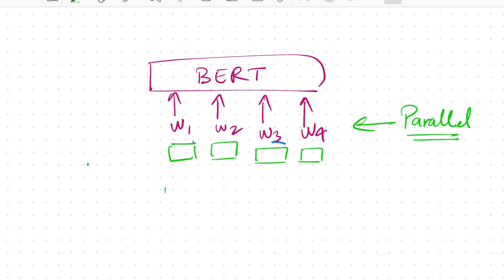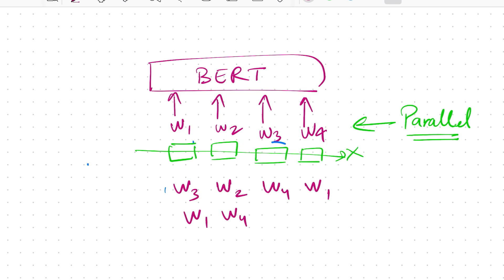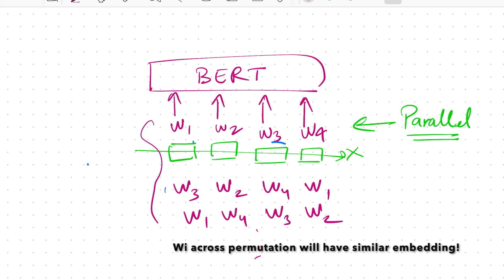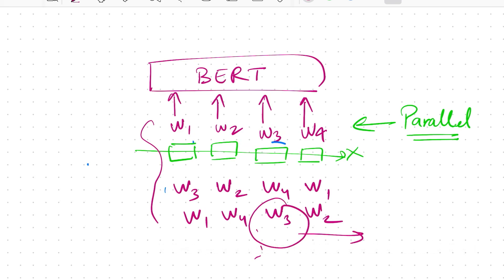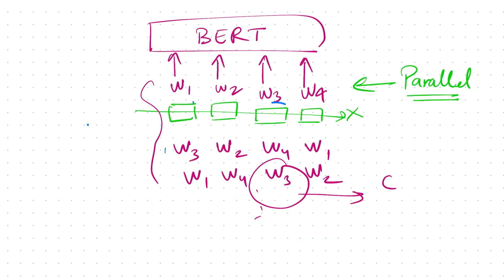The model needs to know the relative positions of each word to better understand the semantics and syntax of the input document. If this was not there, then the representation for w3 that you would get would be the same regardless of whether you permute these words — whether you have w3, w2, w4, w1 or w1, w4, w3, w2 — for all these cases, the representation for any word would be similar.